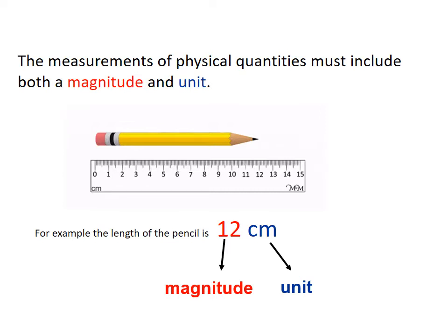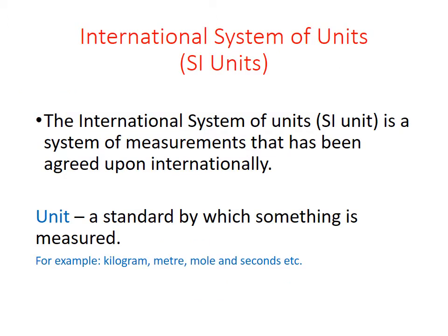So now we are going to take a look at units specifically. In physics, we utilize the International System of Units, otherwise known as SI units. This is a system of measurement that has been agreed upon internationally, meaning these units are the same and can be reproduced very accurately around the world. A unit is simply a standard by which something is measured.